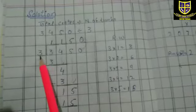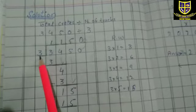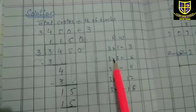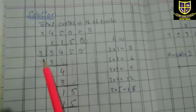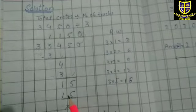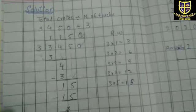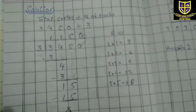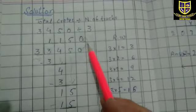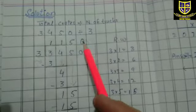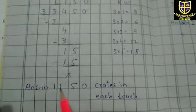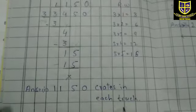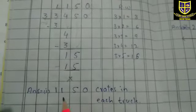Next five نیچے آ گیا تو یہ بن گیا fifteen۔ Three کا table پڑھیں کہ fifteen آ جائے: three five's are fifteen۔ یہ minus ہوا اور نیچے zero آ گیا — کچھ نہیں بچا۔ Next ہمارے پاس zero ہے تو وہ quotient میں چلا جائے گا۔ اس طرح ہمارا first answer بنا: one thousand one hundred fifty crates in each truck — ہر ایک ٹرک میں 1150 crates load کیے جاتے ہیں۔